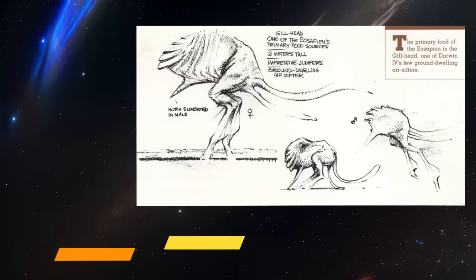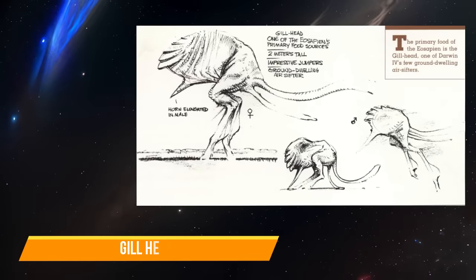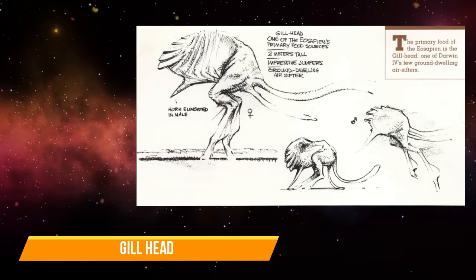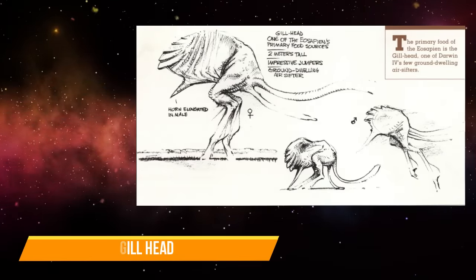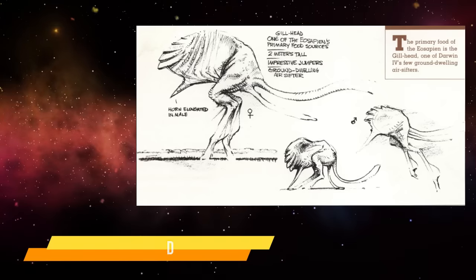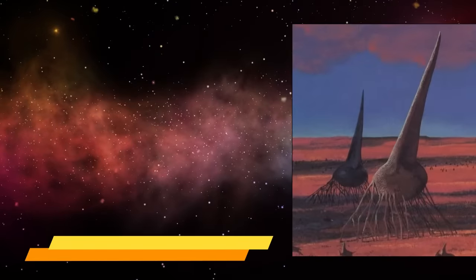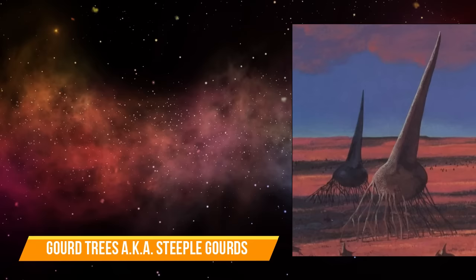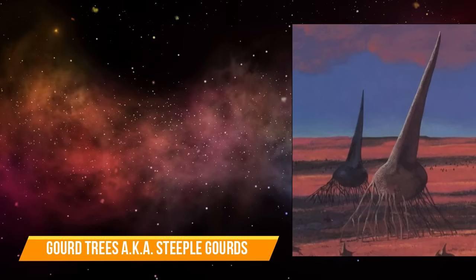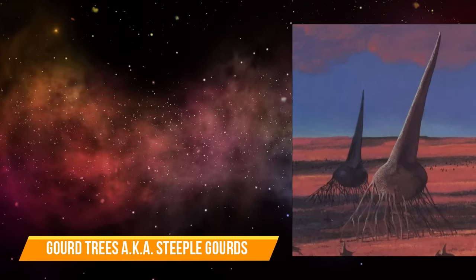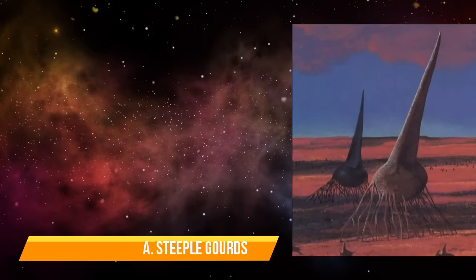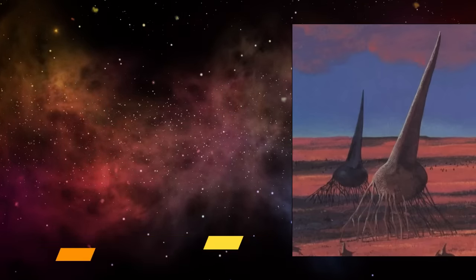Gill Heads are small bipedal air sifters, and are the primary prey of the Eosapiens. They are one of the few species of Darwin IV which have separate sexes. Gourd Trees, also known as steeple gourds, are plants native to Darwin IV. They are 150-foot tall plants supported by stilt roots, and are either hollow or spongy inside — they have to be for the stilt roots to support them.